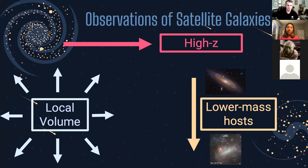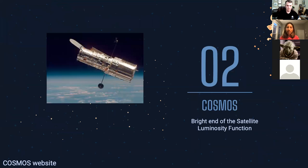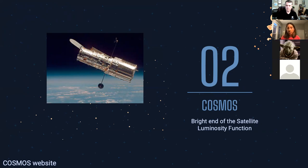Now we can dive into the first project I did with Annika and collaborated with Anna Nierenberg using the COSMOS survey. This was actually the first study of satellite systems of low mass hosts across half the age of the universe. It allowed us to understand hierarchical structure formation as a function of time. We were also able to uncover the bright end of the satellite luminosity function and constrain the low end of the stellar mass halo mass relation.